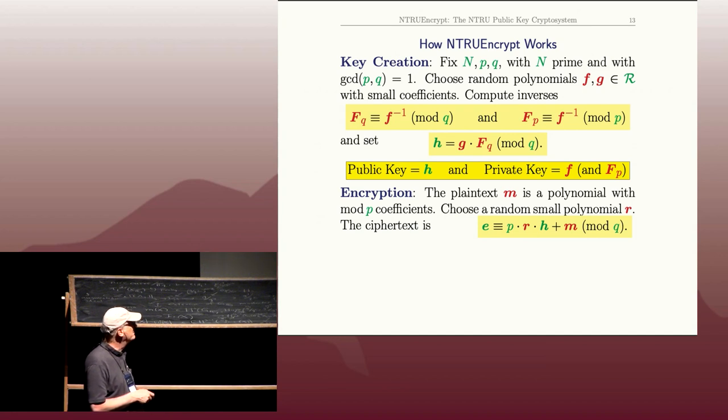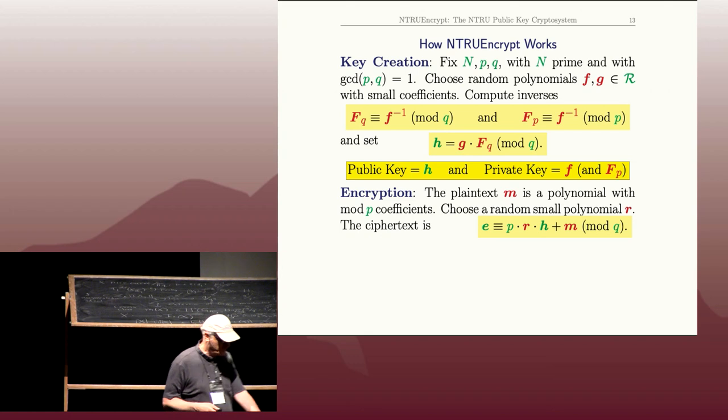And I've been using dots for multiplication in the quotient ring, and star for convolution product. They're the same. So, you could write this convolution product if you prefer. Anyway, he takes the random small polynomial and multiplies it by h in that quotient ring. And he also multiplies every coefficient by p. p is just a scalar, so you just multiply all the coefficients by p. And then he adds on his message, his plain text, which is a small polynomial, and reduces all the coefficients mod q. This is a very fast operation. It's essentially just one multiplication in that quotient ring, plus some additions and some reductions mod q.